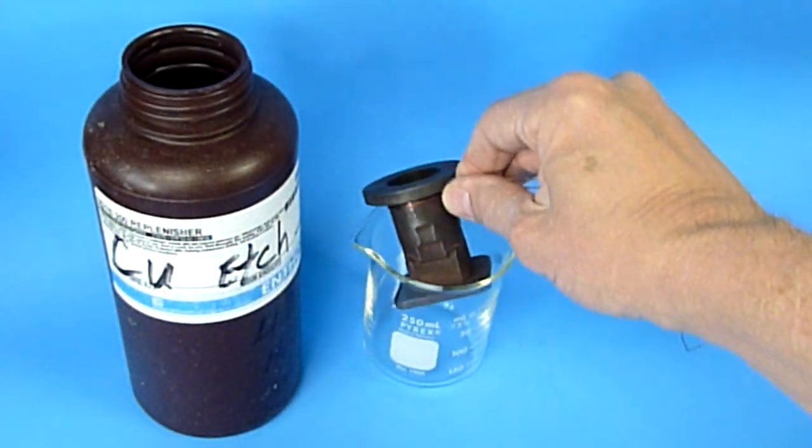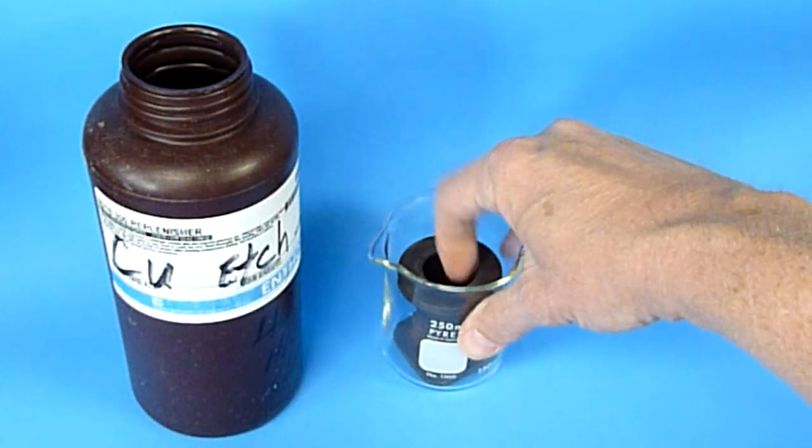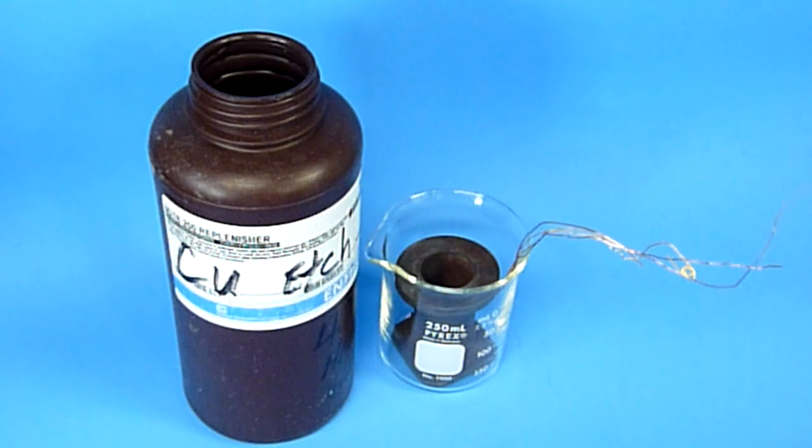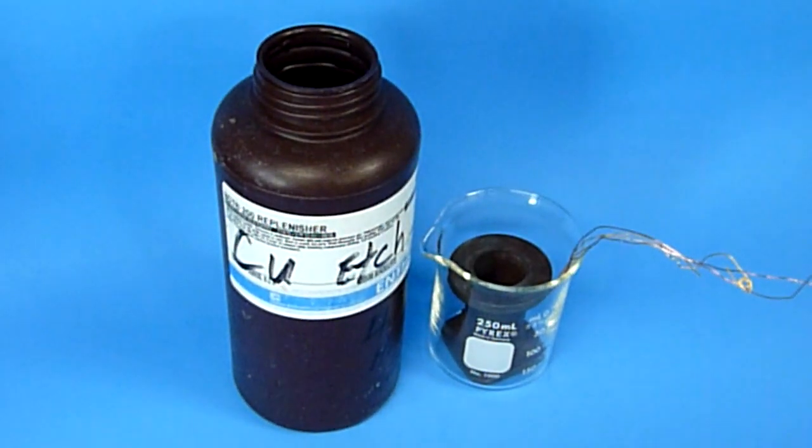So we're going to go into a little beaker, and we're going to use a fairly concentrated nitric acid to do this etch. Let's put a glove on for this part of the operation.